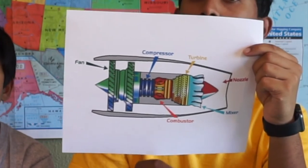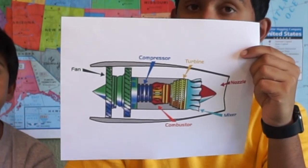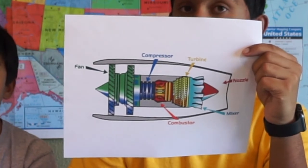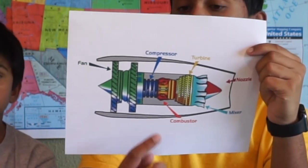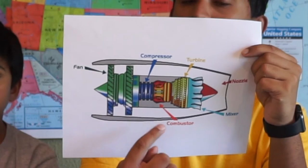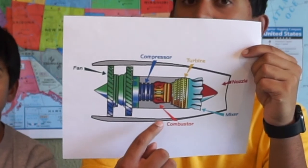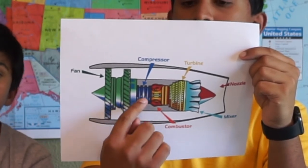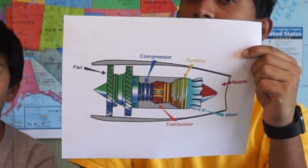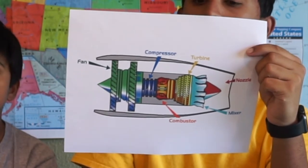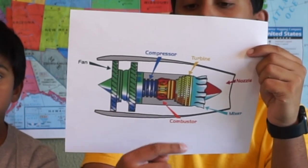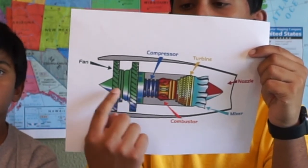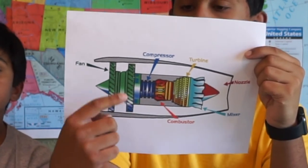When the mixture explodes, the temperature increases by a whole bunch. As we learned with Gay-Lussac's law, when you increase the temperature of air, its pressure increases as well. So now this air has the highest pressure it's ever had. This super high pressure air is forced past the turbine, which is a series of propellers made to spin by the air. The spinning turbine is also connected to the compressor and the fan — that's how they spin.